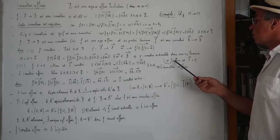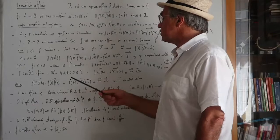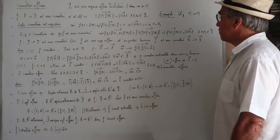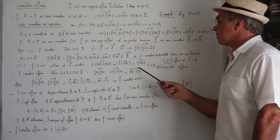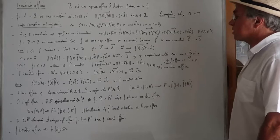Réciproquement, si F est affine et que sa partie linéaire est une isométrie, et bien on a la norme de F(A)F(B) égale la norme de Φ(AB), où Φ est la partie linéaire appliquée au vecteur AB, et comme c'est une isométrie vectorielle, ça fait la norme de AB, quelle que soit AB, donc c'est une isométrie affine.